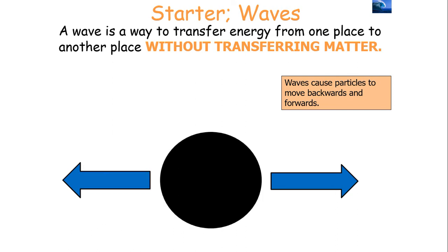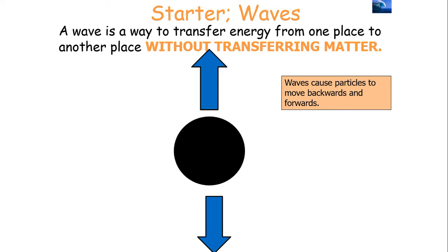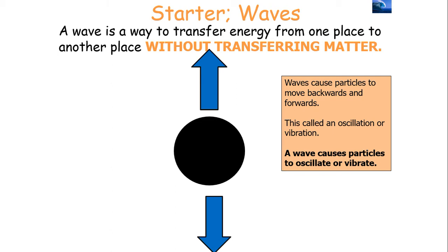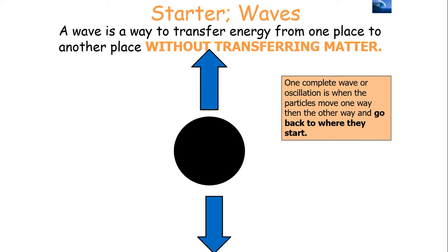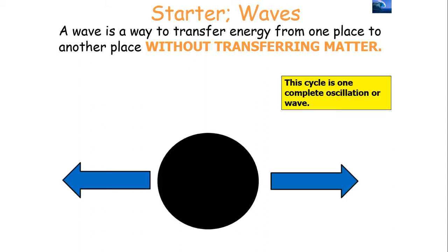A wave causes particles to vibrate backwards and forwards or up and down — that is called an oscillation or a vibration. A wave causes energy to be transferred from one place in the universe to another and can cause particles to oscillate or vibrate. One complete wave or oscillation is where particles move from one way, then the other, and go back to where they started — that would be one complete oscillation.